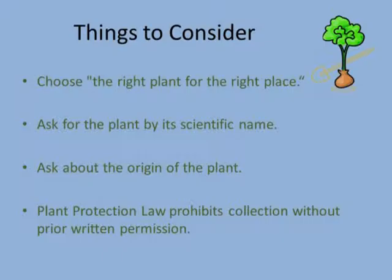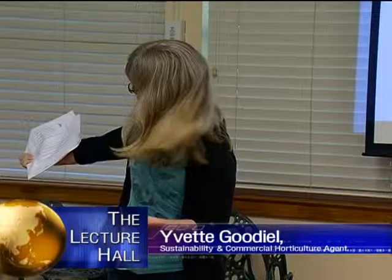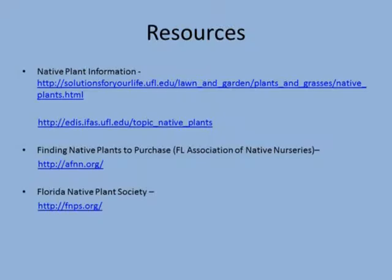Some things to consider: even when working with natives, choose the right plant for the right place — look at the habitat, your soil, your soil moisture, whether you're in full sun or shade. Ask for the plant by its scientific name, as we heard with the cannas, which could be non-native or native depending on the species. There are great resources — the Oxbow has a library, as do your public library and bookstores — native planting books will also tell you the scientific name. Ask about the origin of the plant, because plants grown in your area will be better adapted to your local climate. And if you get excited about propagating native plants, be aware that the plant protection law prohibits collecting on someone's property without permission — always get permission before collecting seeds, leaves, and stems.